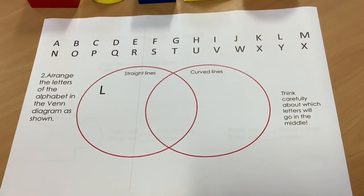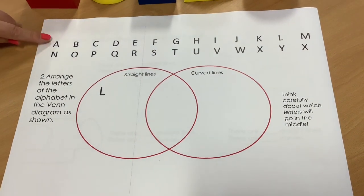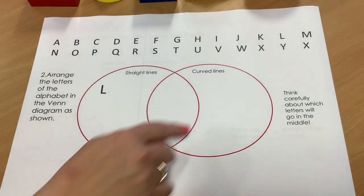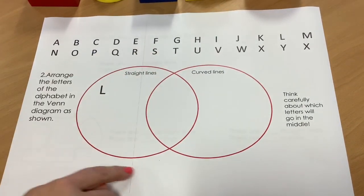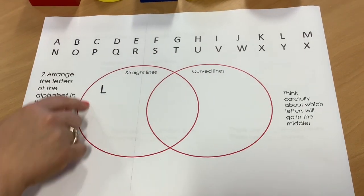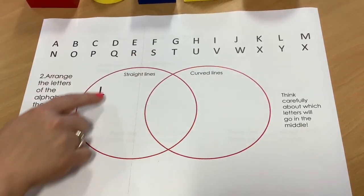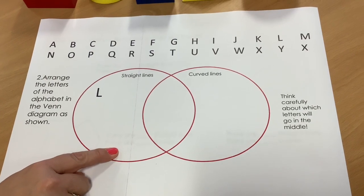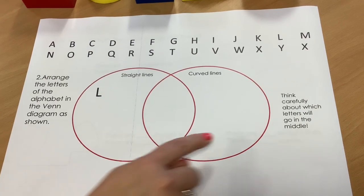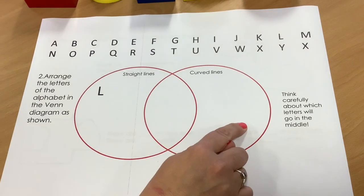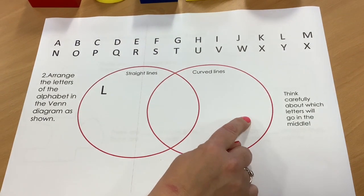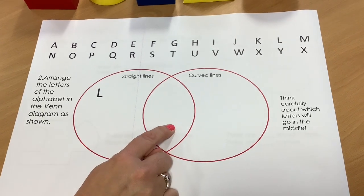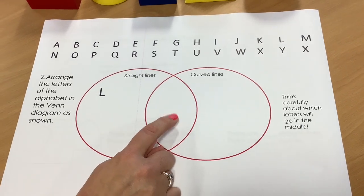For this task, I'd like you to look at the capital letters in the alphabet. We've got a Venn diagram here. In this part of the Venn diagram, letters that are made up only of straight lines; letters that are made up only of curved lines in here. And then think carefully about which letters will go in the middle.